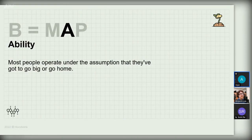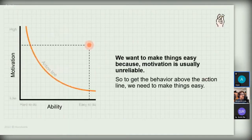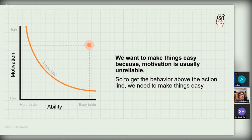The next letter in the behavior model is A for ability. Most people try to do big things like going to the gym for an hour a day every day, which might be unrealistic. What we are trying to do is make things easy, because motivation is unreliable. The only way we can get a certain behavior above the action line is by making it easy.